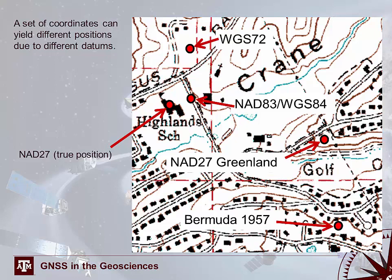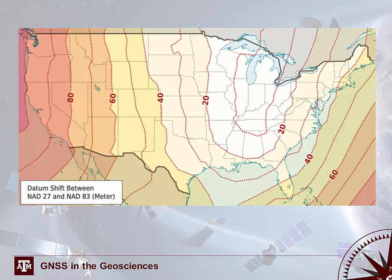Here's another example of how different datums affect the apparent location of a particular feature. In this case, the Highlands School has been mapped using a variety of different datums, which causes the school's apparent location to shift significantly. Notice particularly how large the shift is for the NAD-27 Greenland datum and for the Bermuda 1957 datum. This example highlights the importance of understanding what datum your data has been collected in and how it's stored.